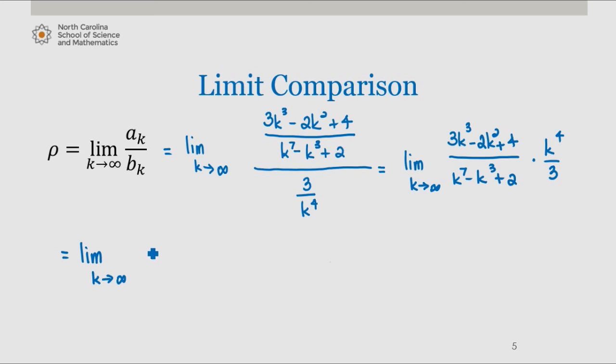Expanding this, we find the quotient to be 3k to the seventh minus 2k to the sixth plus 4k to the fourth divided by 3k to the seventh minus 3k cubed plus 6.